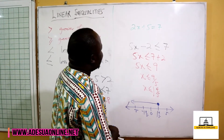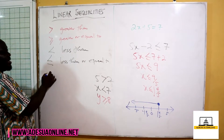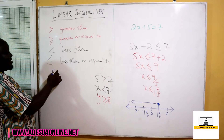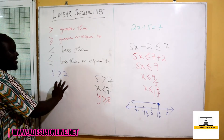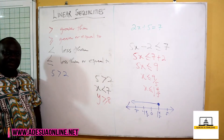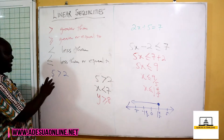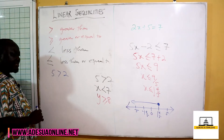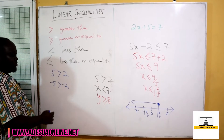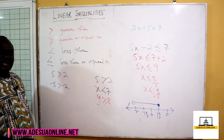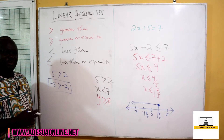Now, assuming we have a negative number — maybe you have been given 5 is greater than 2. You know this is a valid statement because 5 is greater than 2. Now, assuming I use negative 1 to multiply through this, this becomes negative 5 is greater than negative 2. I ask you: is this a valid statement, that negative 5 is greater than negative 2? No.